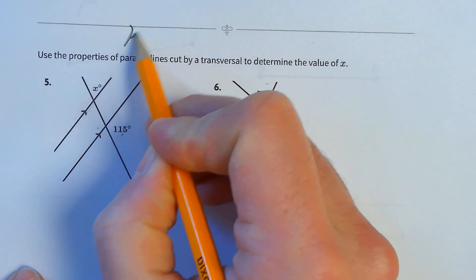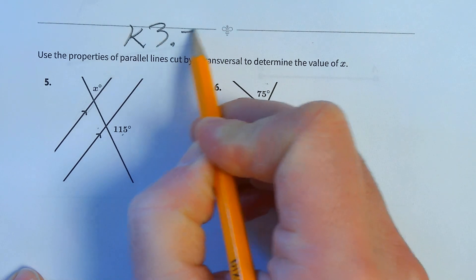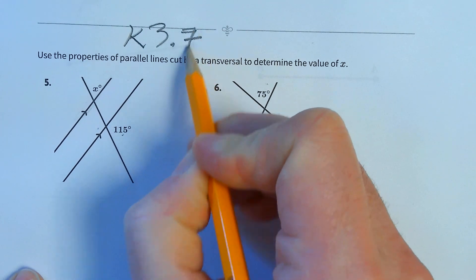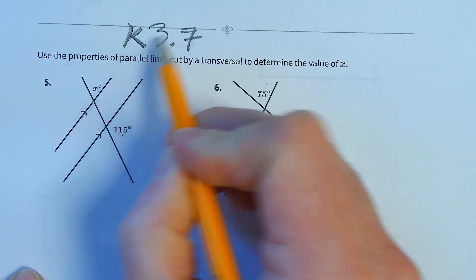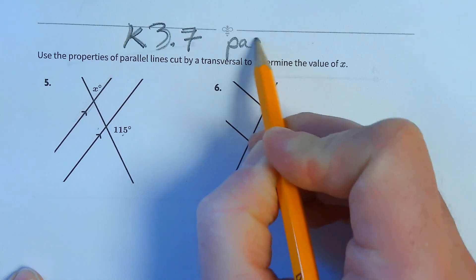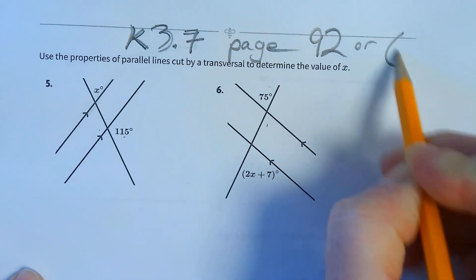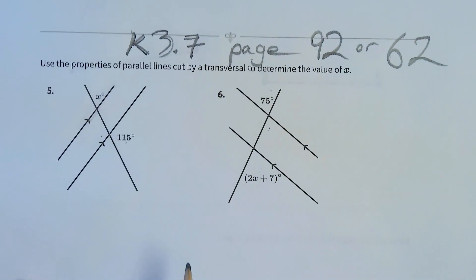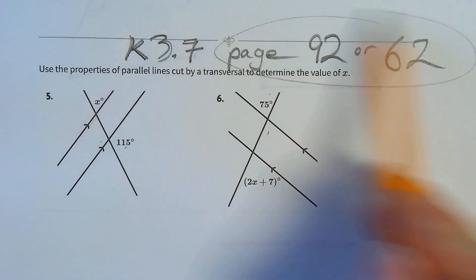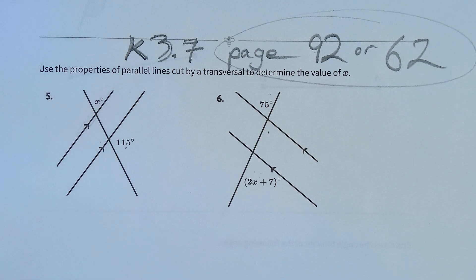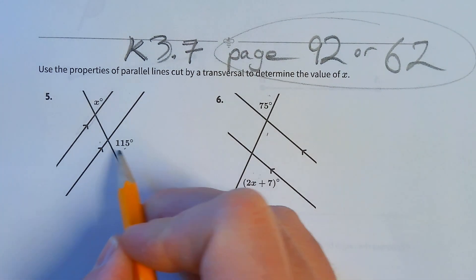Welcome back to K3.7. Okay, this is on page 92, or 62, if you're in the stable packet. Alright, these are parallel.